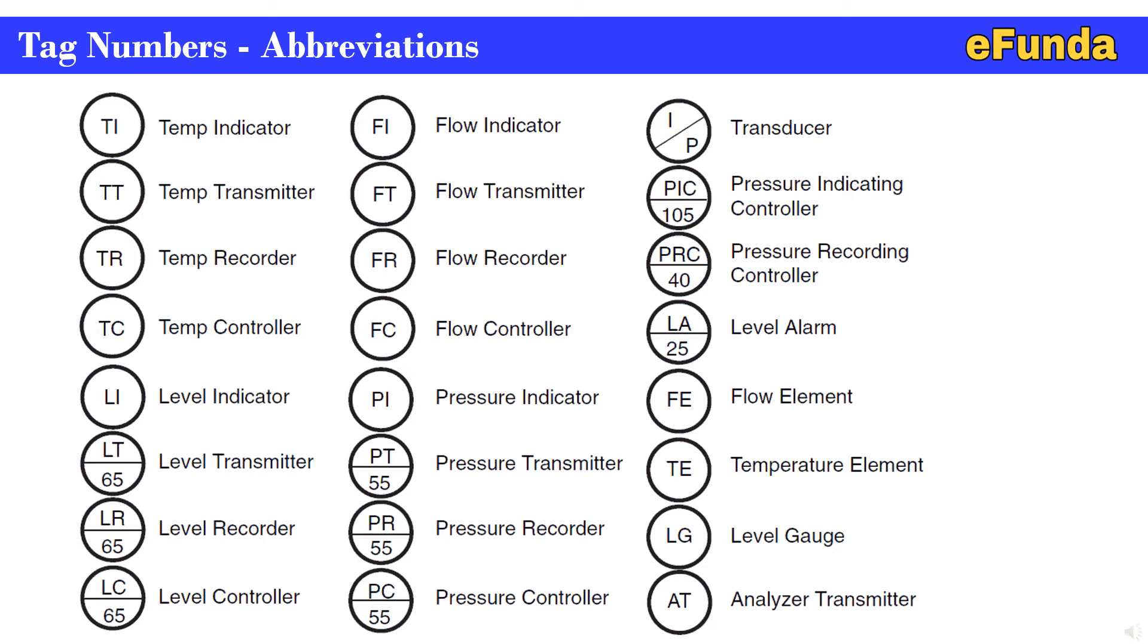Similarly, in the miscellaneous column, one can see I2P, that is a transducer. PIC is pressure indicating controller, PRC is pressure recording controller. LA is level alarm, FE is flow element, TE is temperature element, LG is level gauge, AT is analyzer transmitter. This is how the nomenclature or abbreviation for the tags are indicated on the P&ID.